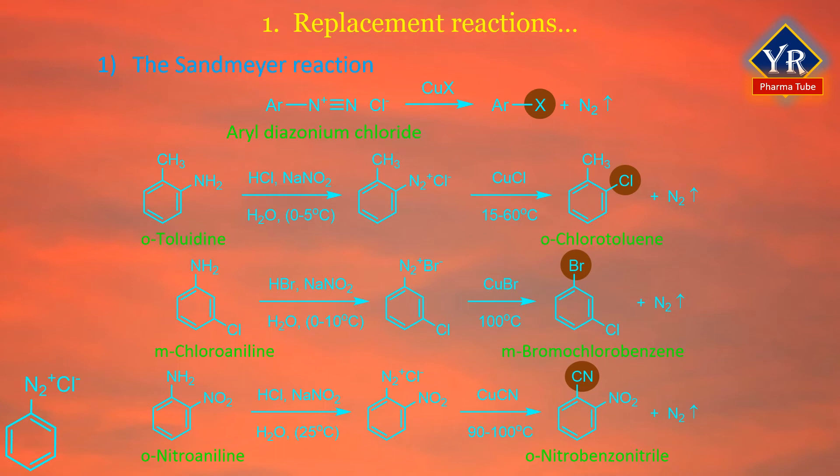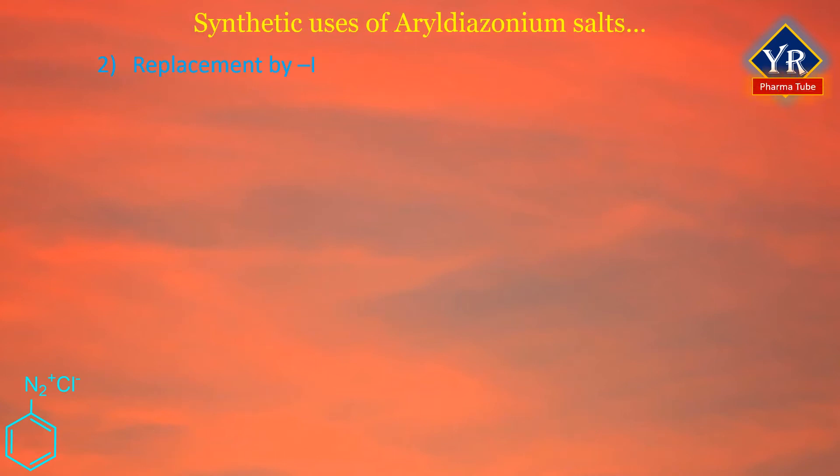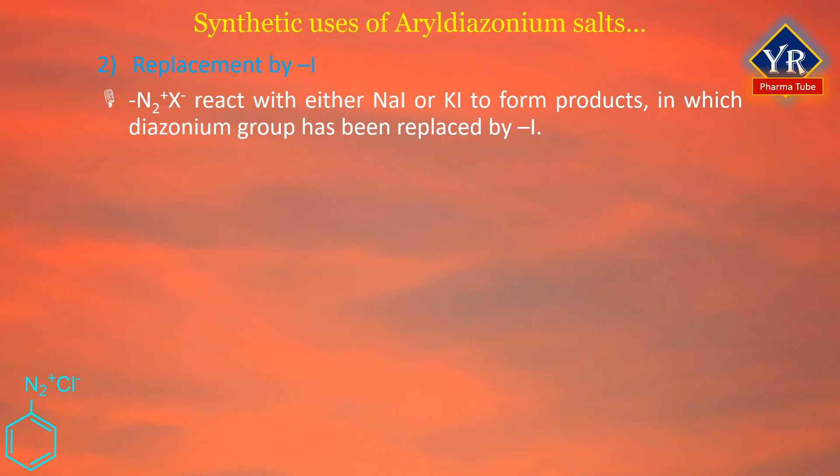The Sandmeyer reaction is an alternative to direct chlorination or bromination of an aromatic ring using a Lewis acid. Using cuprous cyanide, it is also an excellent method for attaching another carbon substituent to an aromatic ring.